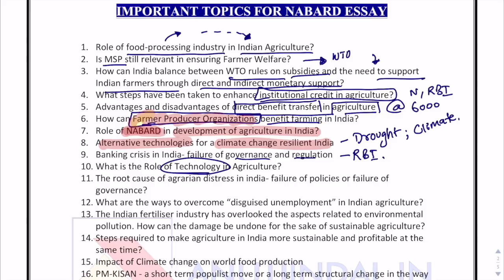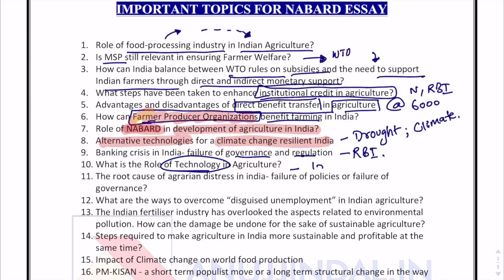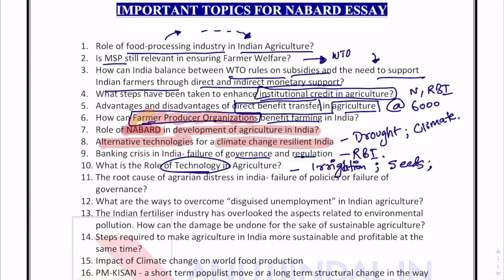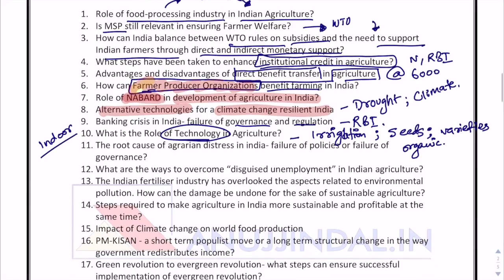What is the role of technology in agriculture? Various upcoming technologies — whether it's with respect to irrigation, drip irrigation, sprinklers and other kinds of irrigation; whether it is seeds or drought-resistant varieties of seeds; whether it is organic farming becoming more resilient and popular through the usage of technology; whether it is indoor agriculture, which is a technology being adopted from Israel — all these technologies become very important and are certainly important for the examination.